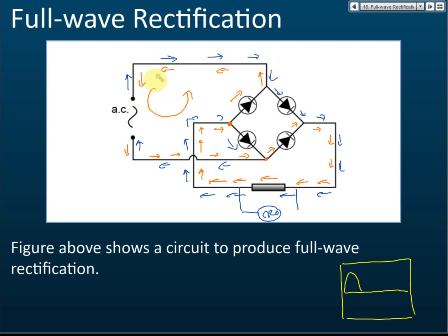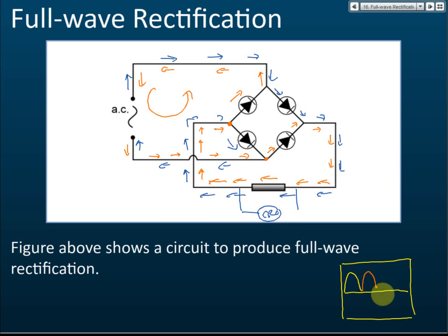You can see that the currents move in two directions in other parts of the circuit — forward and backward — but in the section across the resistor, the current always moves in the same direction, whether the supply is clockwise or anti-clockwise. The blue arrow and the orange arrow through the resistor are both in the same direction.